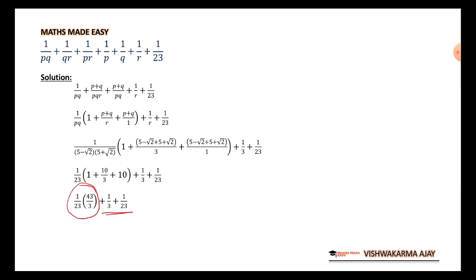We will work on this part, 23 and 3. So we have 43 upon 3 times 23, 23 plus 3 is 26 upon 23 times 3.